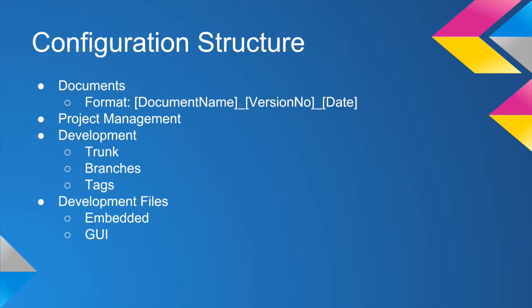The development files — basically there are two kinds: the embedded and the GUI. Embedded files refer to the source codes for the robot, and GUI refers to the source codes for the GUI itself.